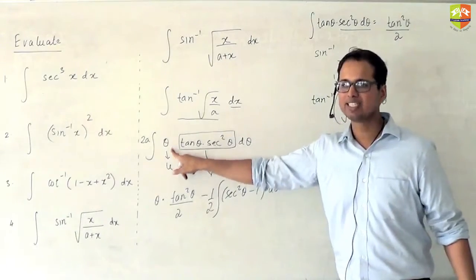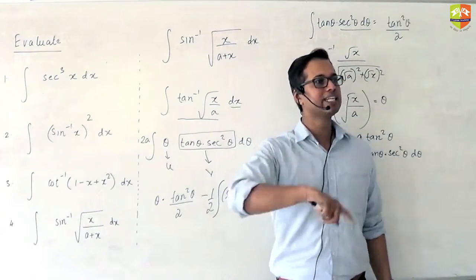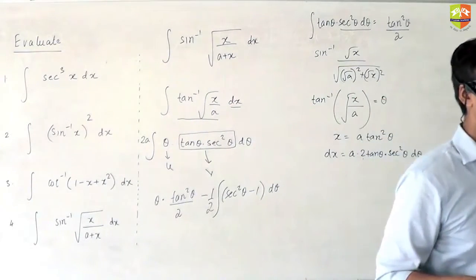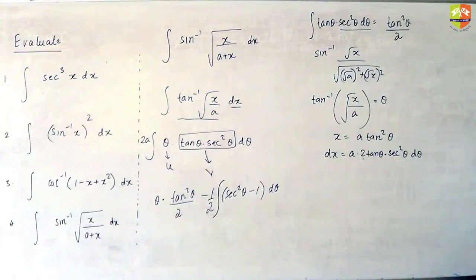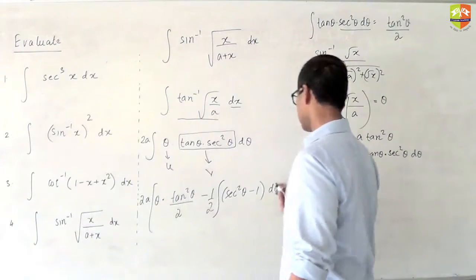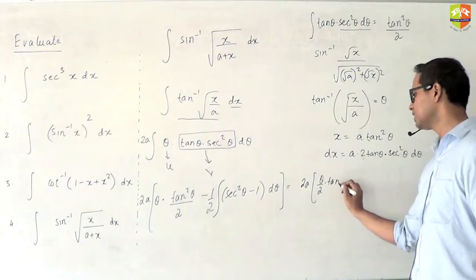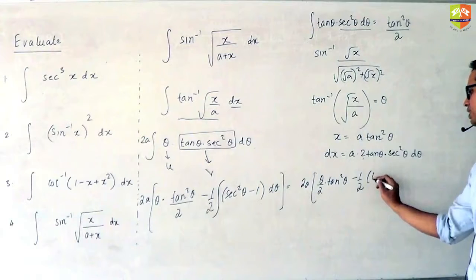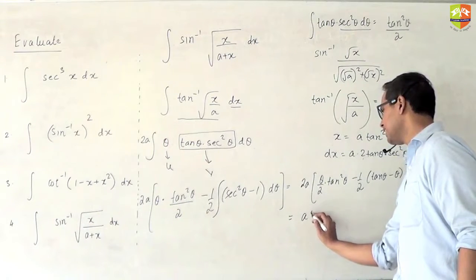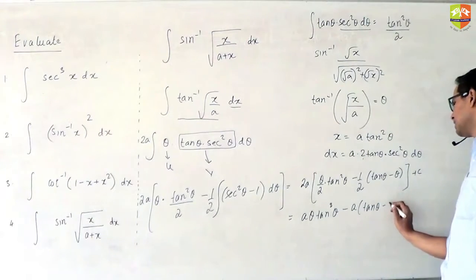This thing was taken as v because it is easy to integrate. Theta is u because if you integrate θ it will continue growing in power — I want it to vanish, not grow. That's why we take the algebraic function as u. So the answer will be 2A times [θ·(tan²θ/2) minus (1/2)(tan θ − θ)] plus C. Multiplying through by 2A: A·θ·tan²θ minus A·tan θ minus A·θ plus C.